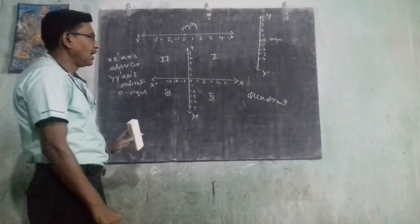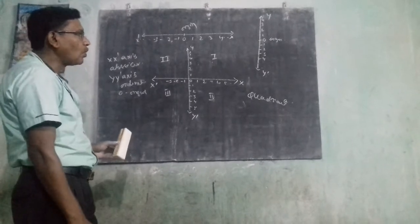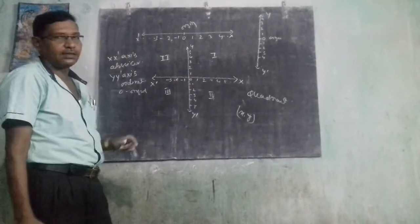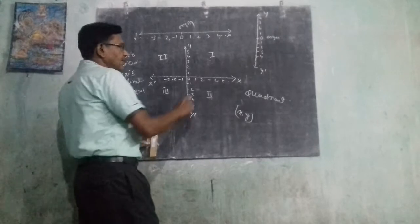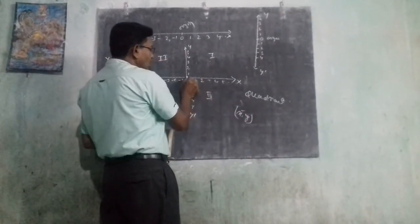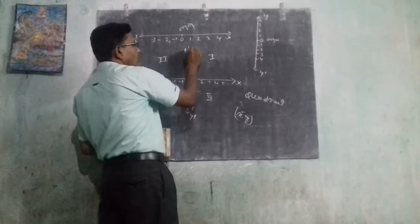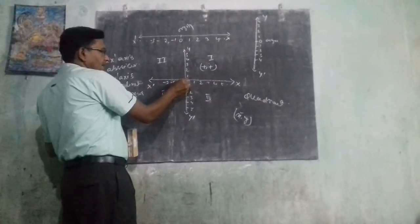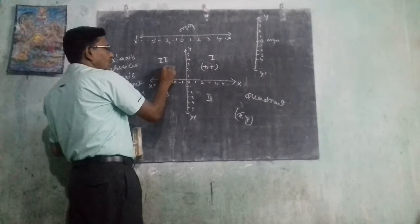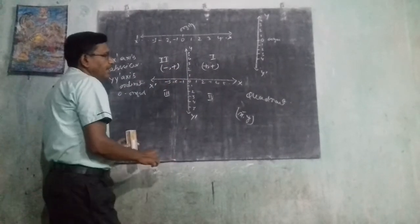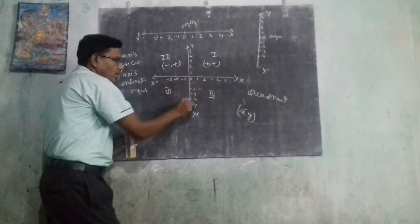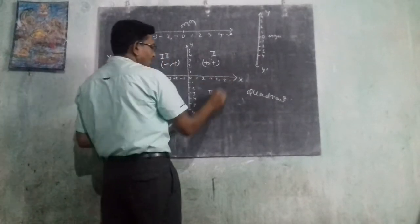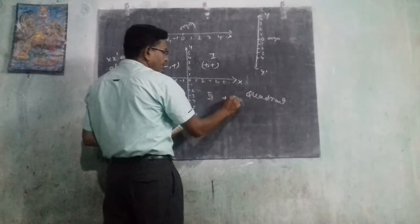In each quadrant we take coordinates, meaning x and y values. In the first quadrant, x-axis is positive and y is also positive, so it is positive-positive. In the second quadrant, x-axis is negative and y is positive, so it is negative-positive. In the third quadrant, x is negative and y is also negative, so it is minus-minus. In the fourth quadrant, x-axis is positive and y-axis is negative, so it is positive-negative.